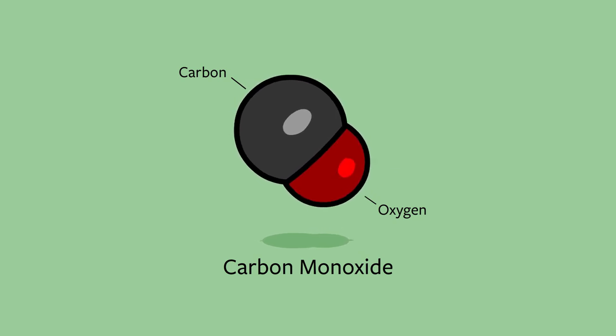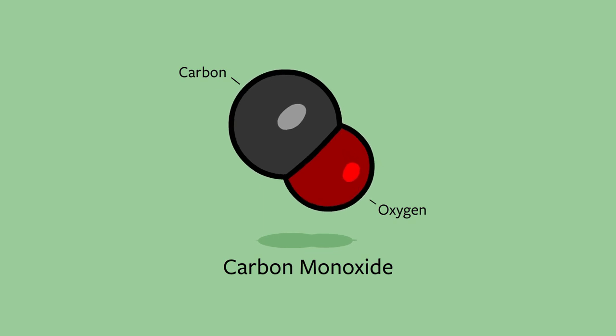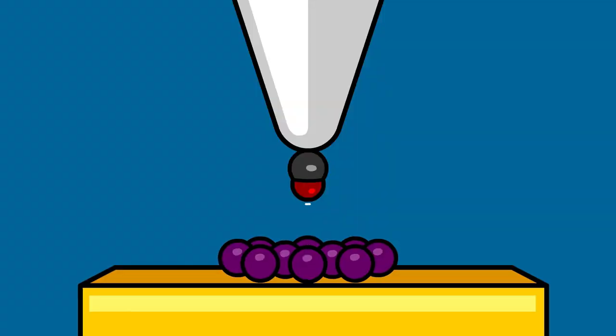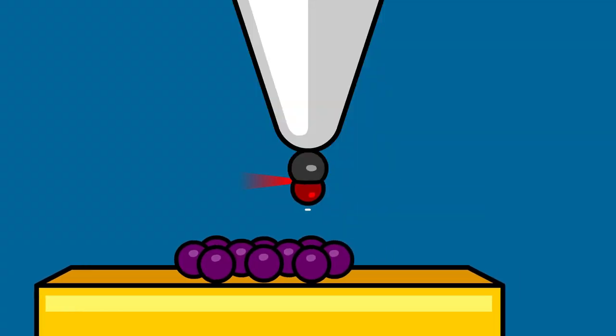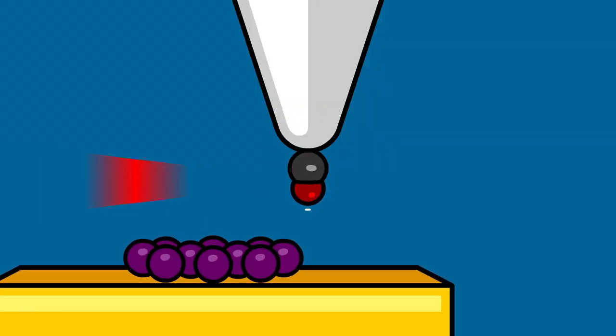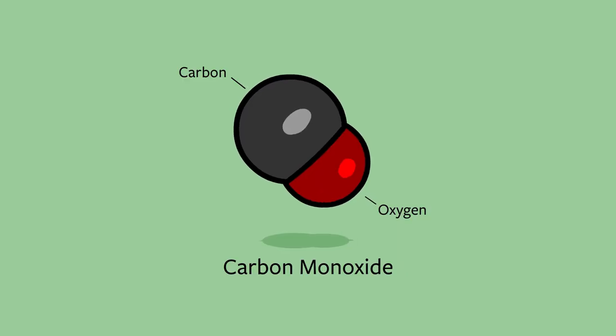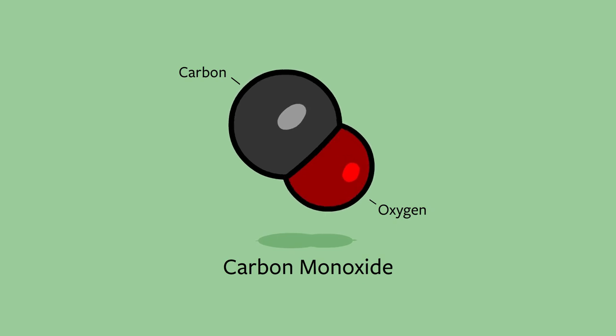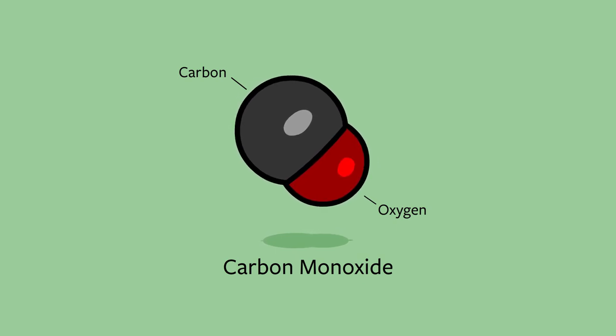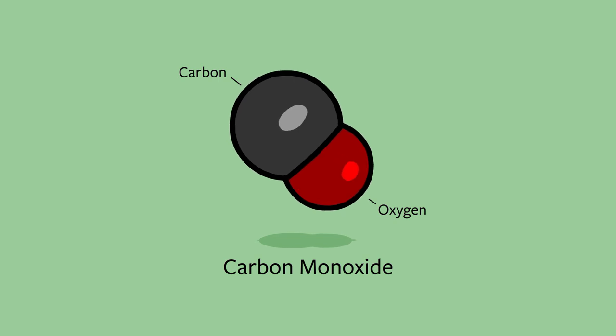Now, some people might take issue with me calling this the world's smallest machine because in order for this machine to work, it has to be attached to a scanning tunneling microscope. And a scanning tunneling microscope is pretty big. It's about the size of the motor in a Ford Focus, roughly. But even if you only want to consider this to be the world's smallest sensor or component, it is still an absolutely spectacular breakthrough in the world of nanotechnology.